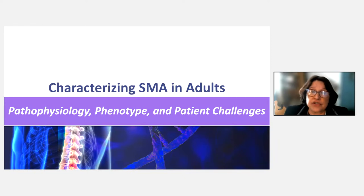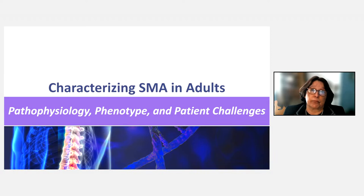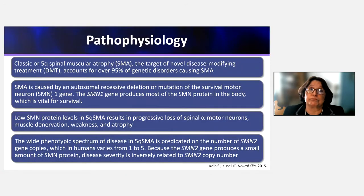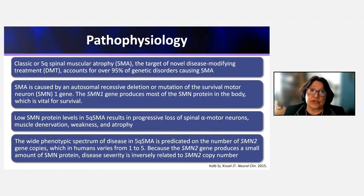Let's start by characterizing SMA in adult patients, covering the pathophysiology, phenotype, and patients' challenges. Today we're going to focus on classic SMA, also known as 5Q-SMA, which refers to chromosome 5Q where the gene is located — spinal muscular atrophy.